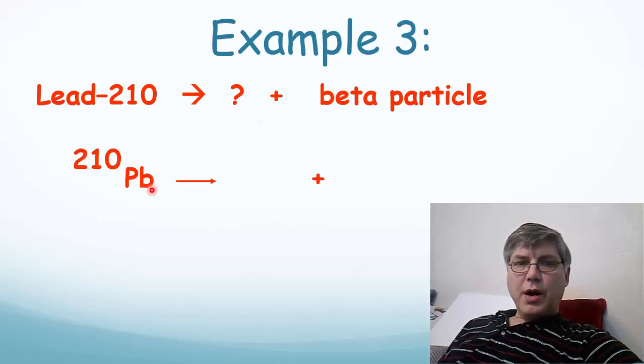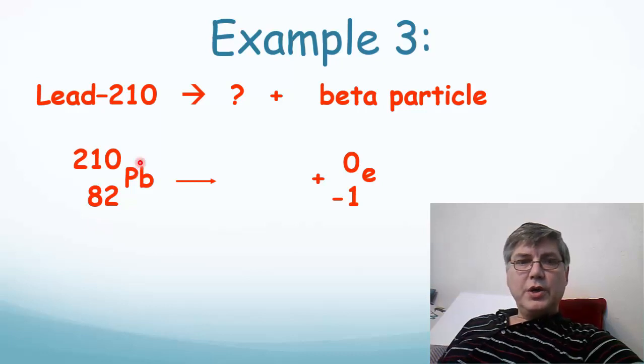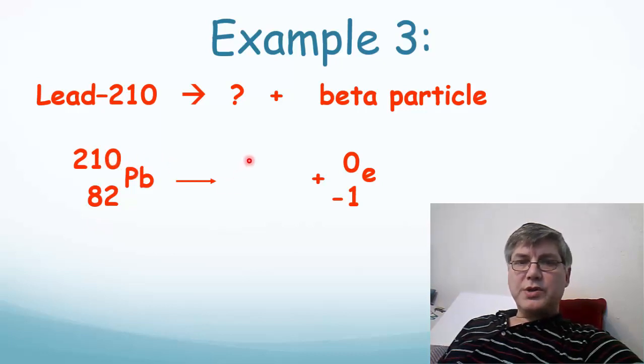So we start with our 210 and our lead. And let's put our beta particle right over here. That's a 0 over negative 1. Now we need to know what goes down here. So we look up lead on the periodic table and we find out that it has an atomic number of 82. So now we know that 210 is equal to something plus 0. So what goes up here? 210.